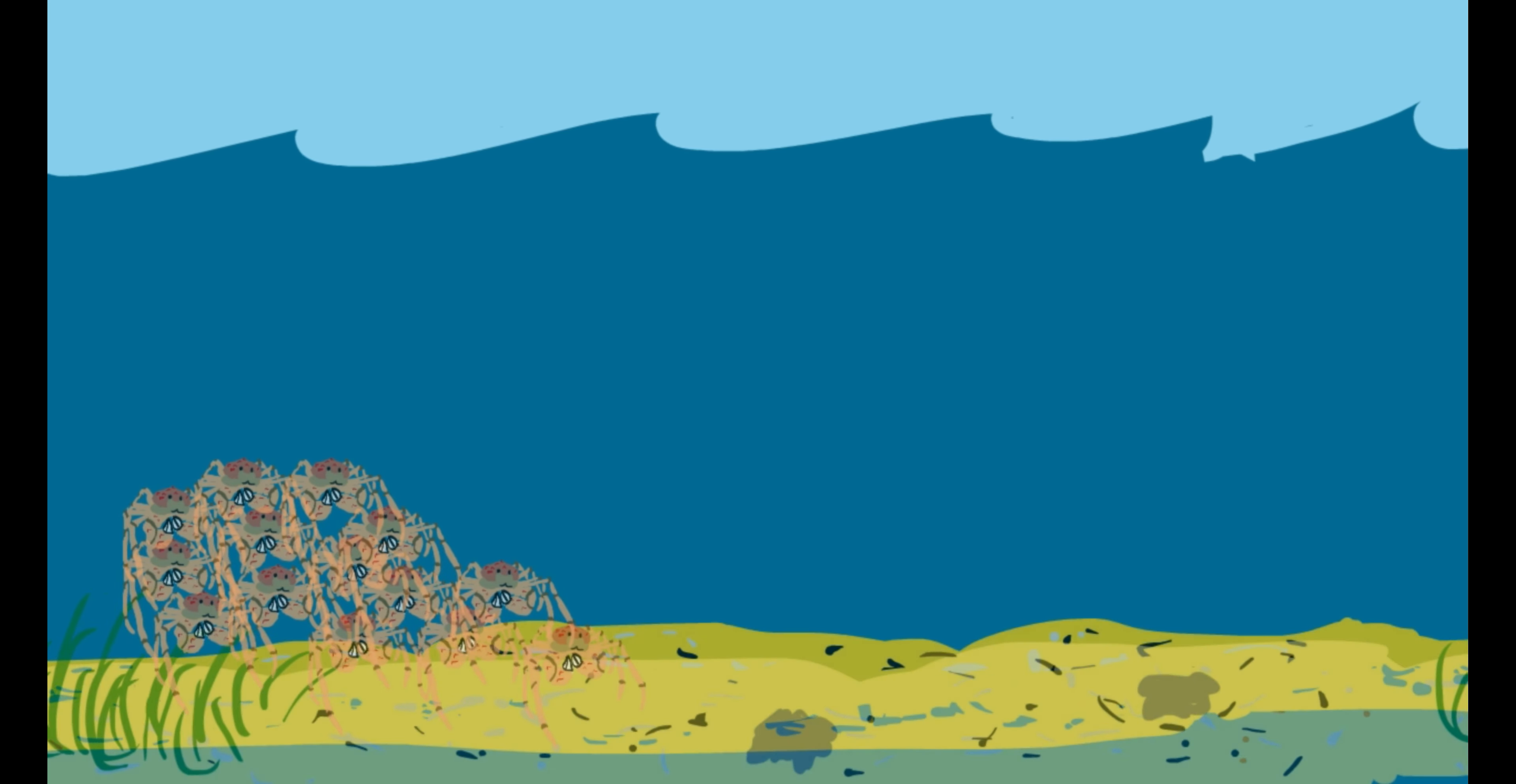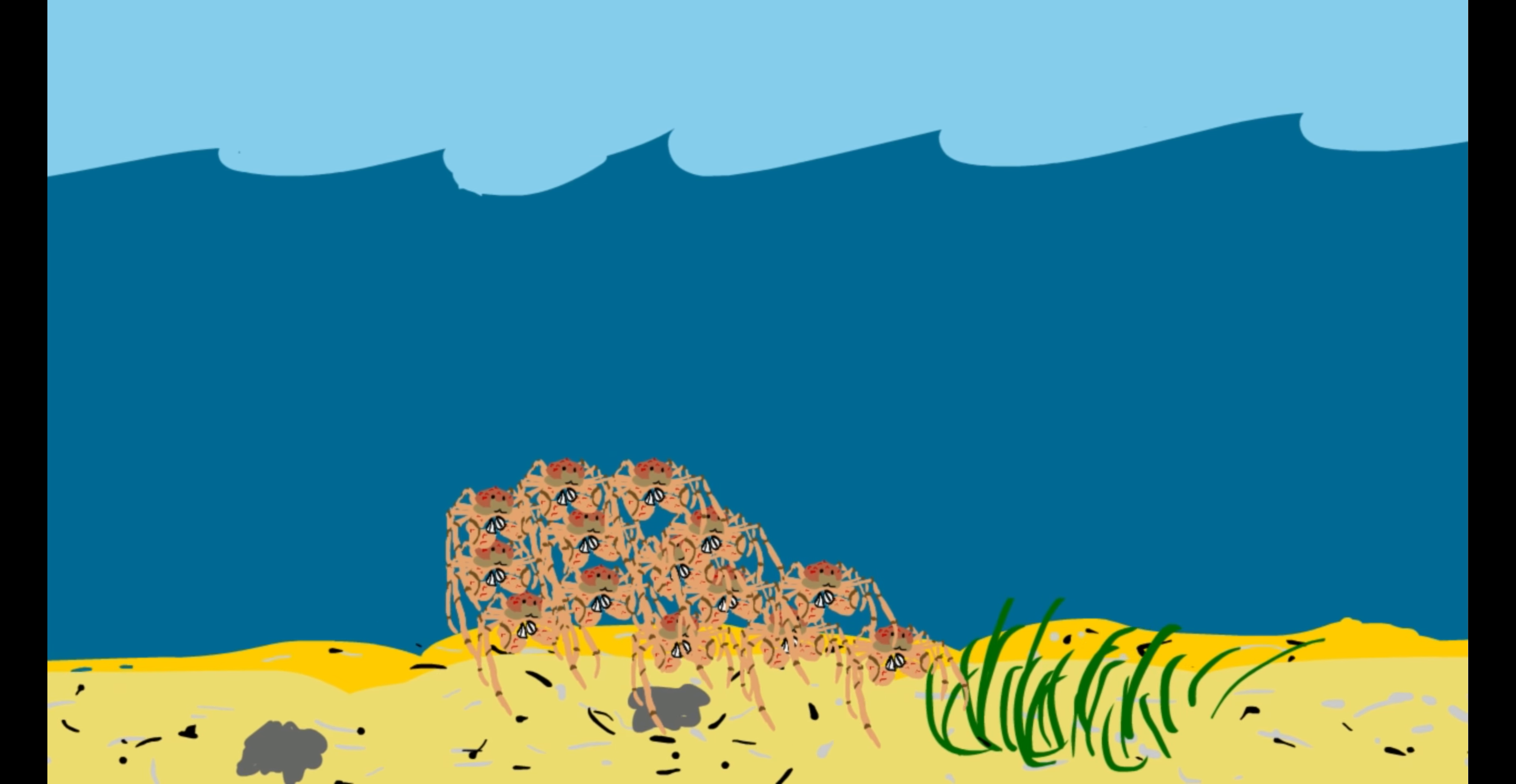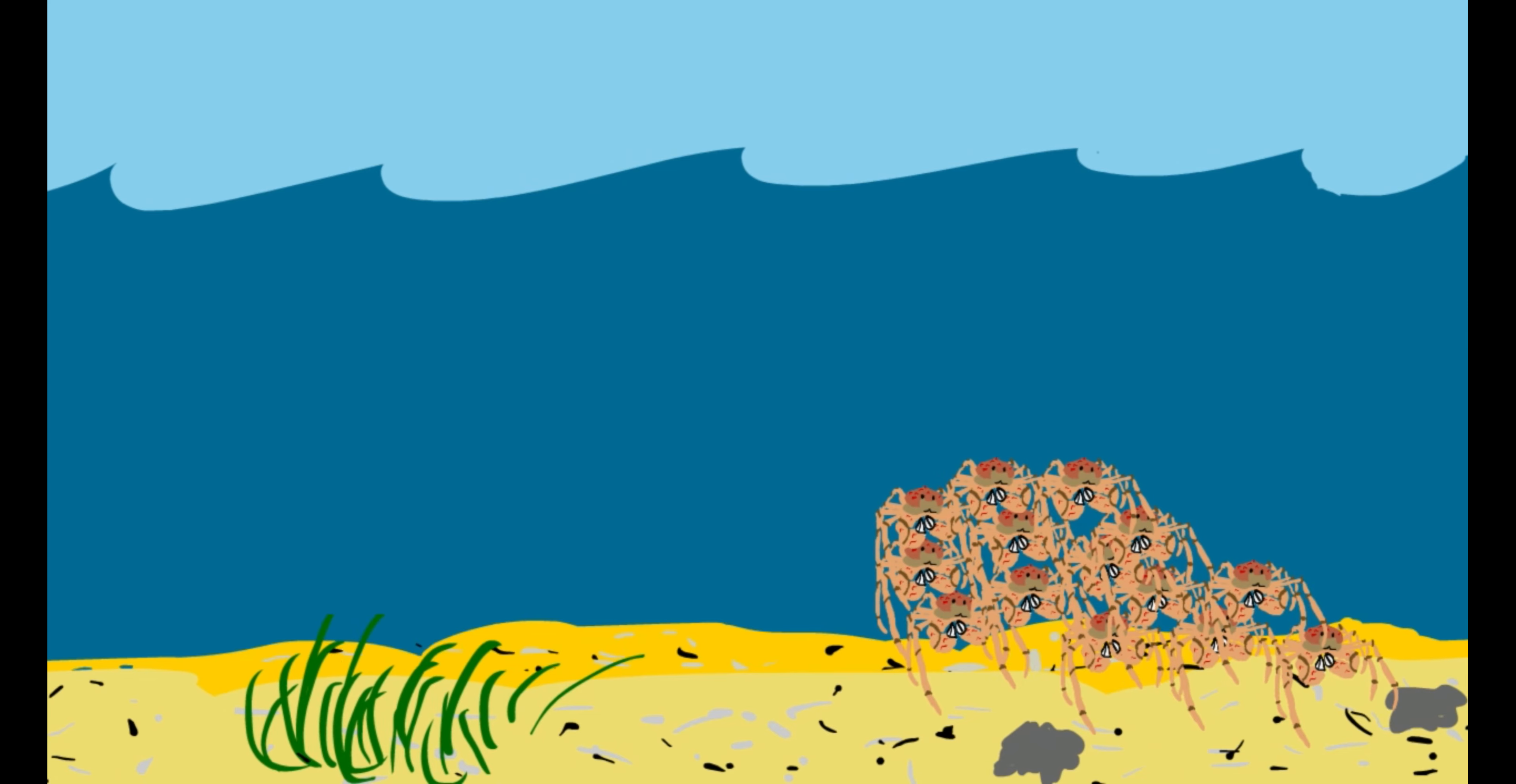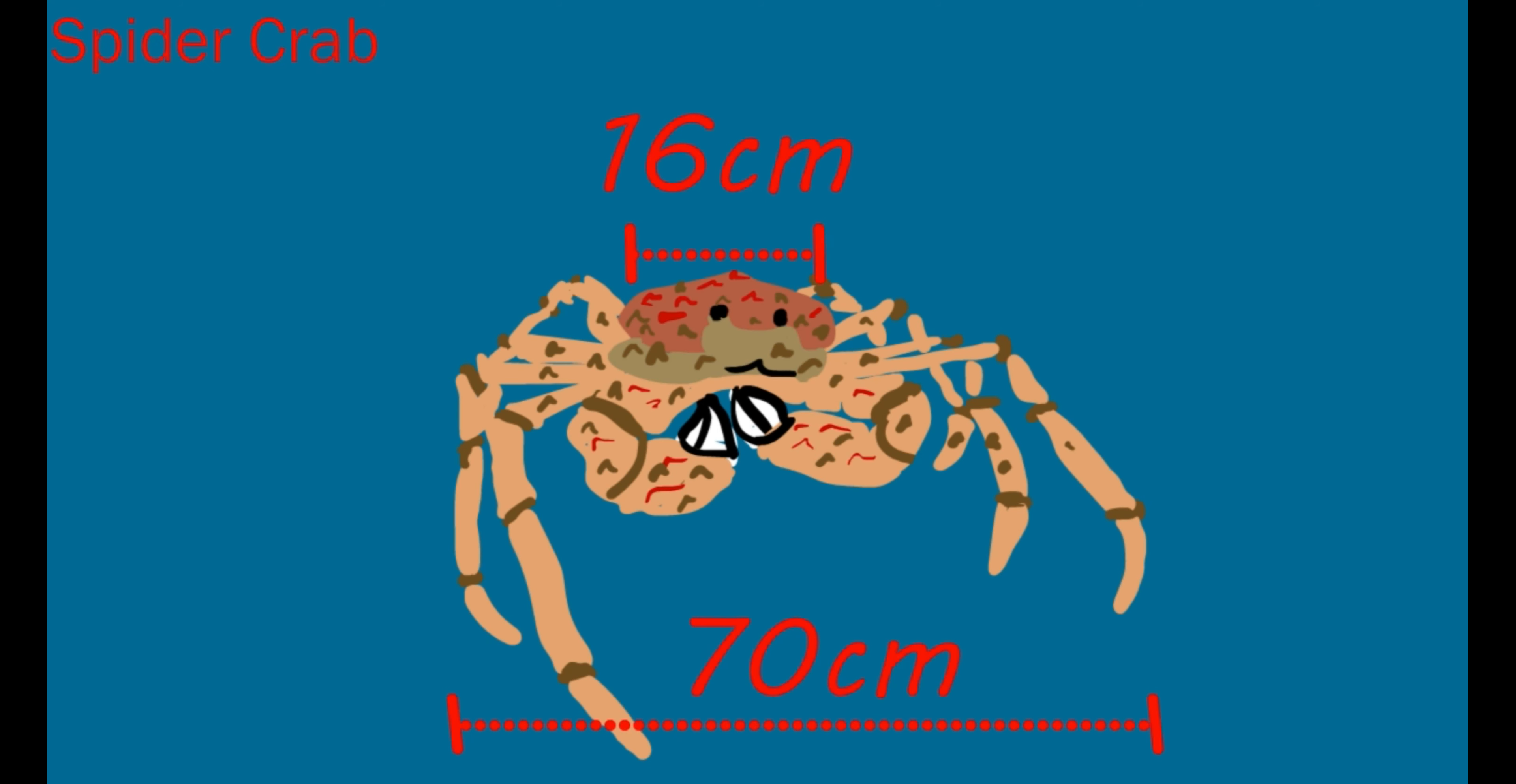There are also more easily seen citizens living at the bottom of the bay. Spider crabs migrate in huge crowds to shed their shells in the shallower bay waters. Thousands of spider crabs gather together to protect against predators while they shed their hard shells. Their bodies can be 16 centimeters across and including their legs can make them 70 centimeters across. Together they like to eat plants and small fish.